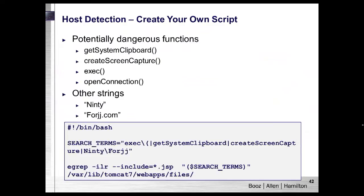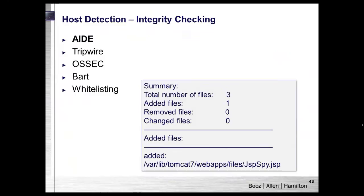With this strategy in mind, you could create your own script to search for suspect functions or modify one of the ones we've seen. That way you can incorporate what files and functions are normal for your specific environment. I've listed dangerous functions associated with JSP-SPY along with other strings, and at the bottom I've written a bash script that looks for those search terms on a system, focusing on JSP files. Integrity checking, such as AIDE, is another approach — it can detect modified or newly created files and produce simple output indicating a new file was added to a publicly available directory.